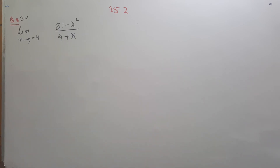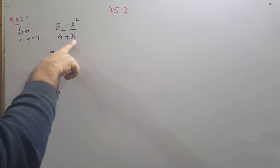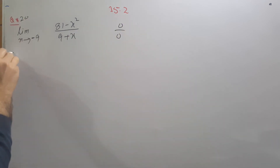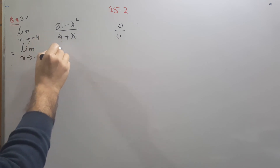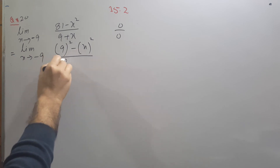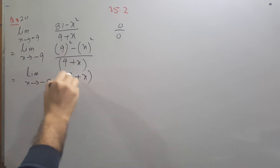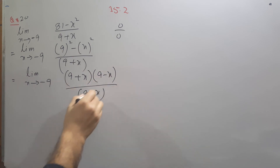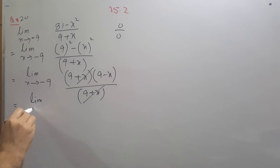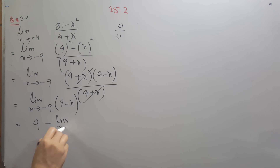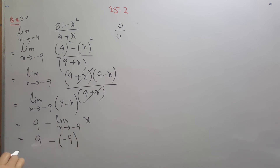The next question is similar: if we put x equals minus 9 into the denominator we get 0, and the numerator also gives 81 minus 81 equals 0. Since both are 0 we can simplify. Writing the numerator as 9 squared minus x squared and applying the difference of squares formula gives (9 plus x)(9 minus x), with (9 plus x) in the denominator cancelling out. Applying the limit as x approaches minus 9 on (9 minus x): 9 minus (minus 9) equals 18.